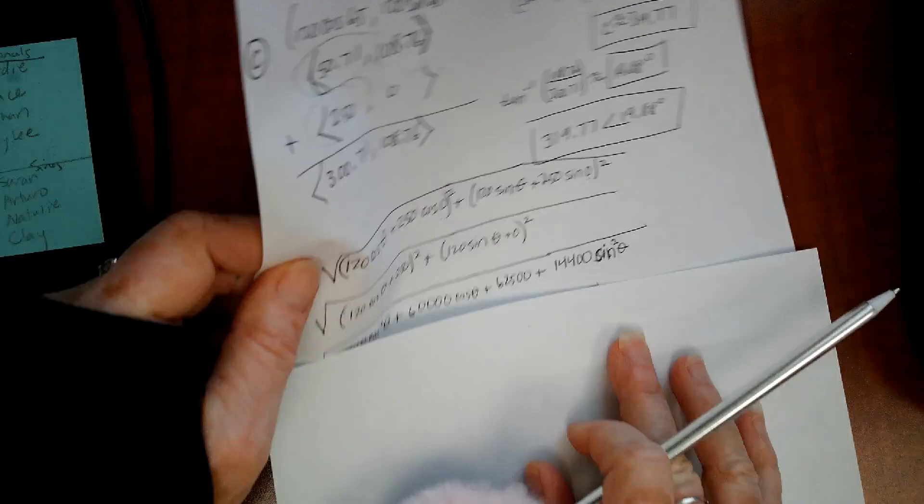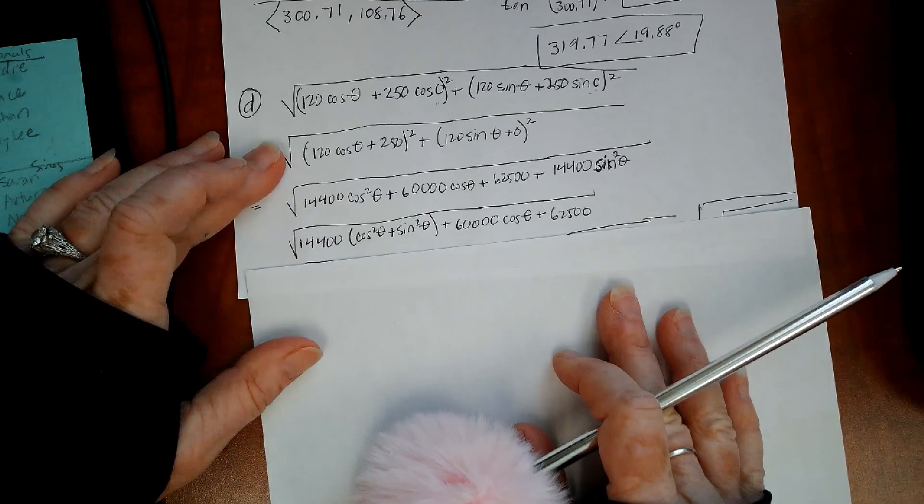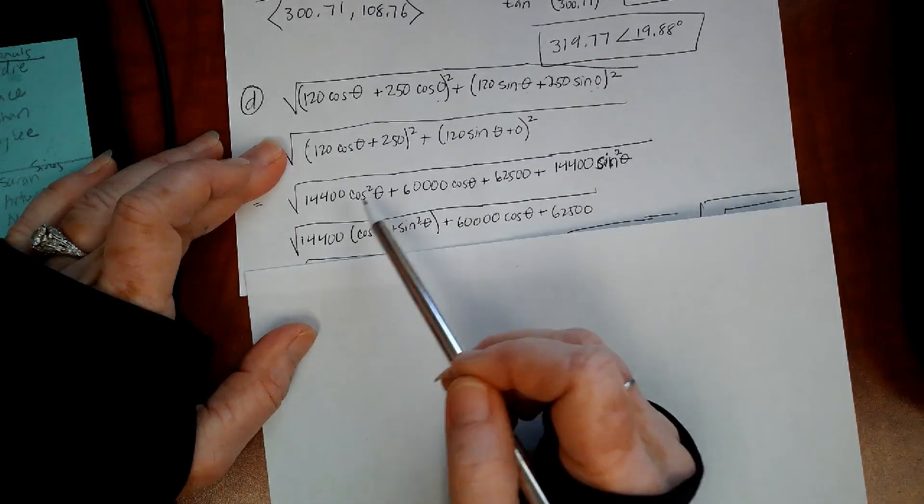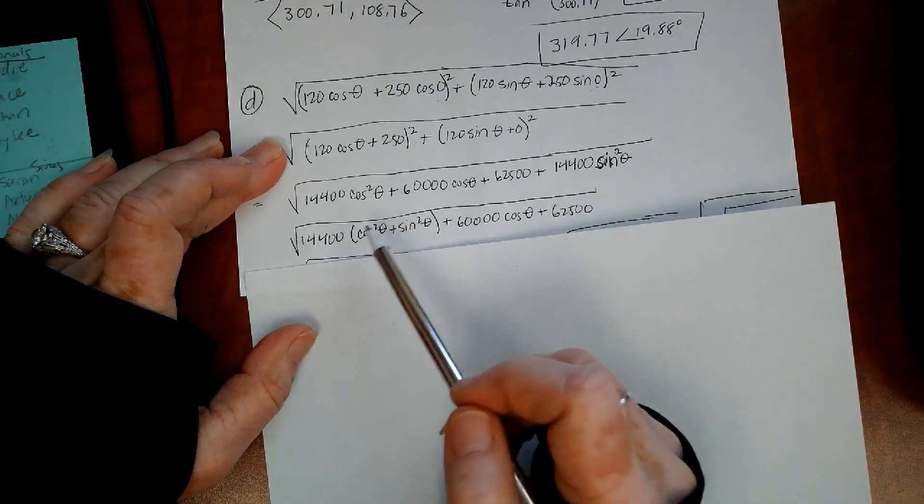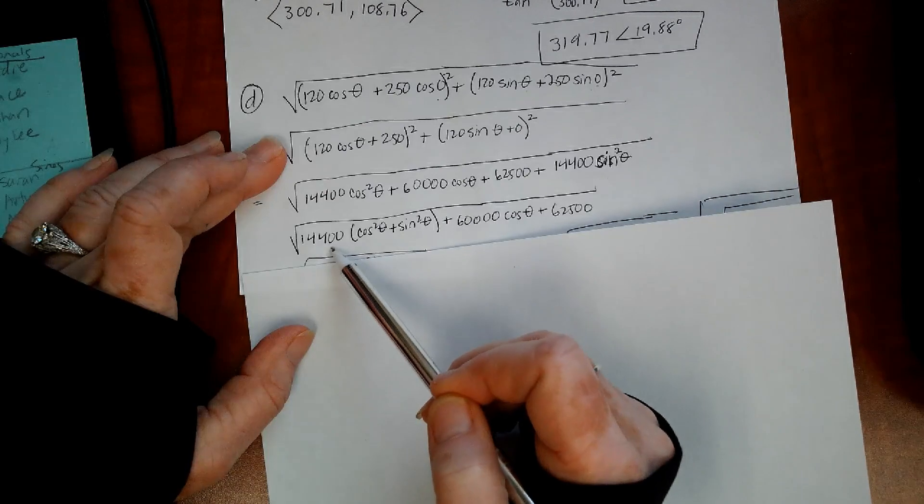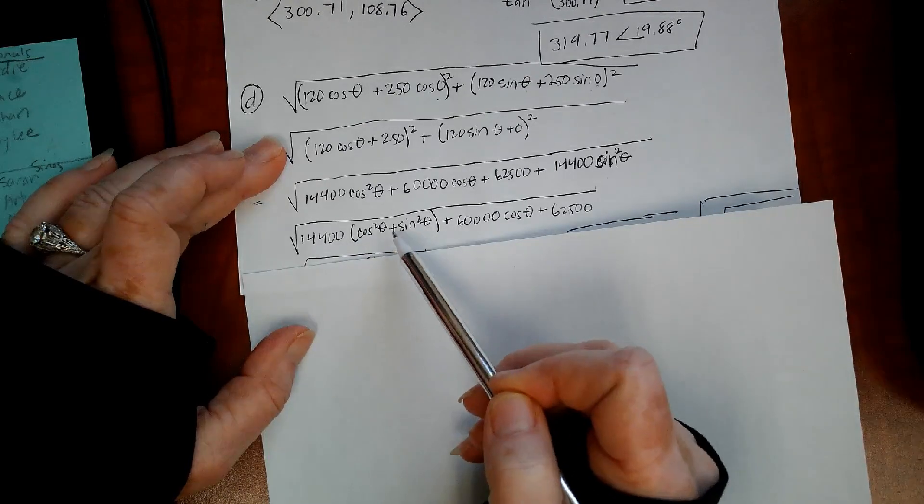Cosine squared theta plus sine squared theta equals one. So I moved this one and this one. I put them next to each other, and I factored out the 14,400. And then cosine squared theta plus sine squared theta equals one. And then the rest of this is just still waiting to be dealt with. So there's the one.